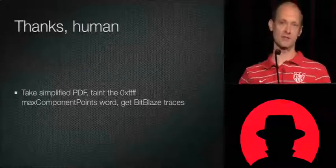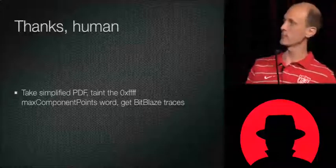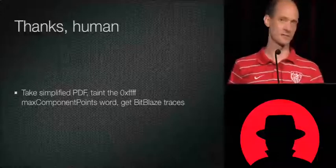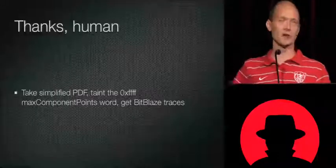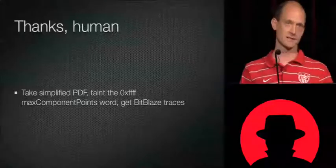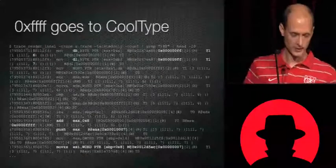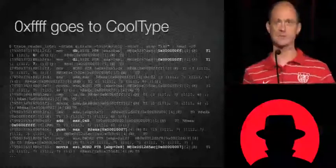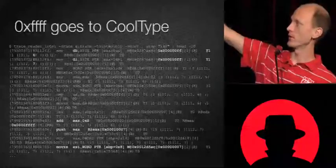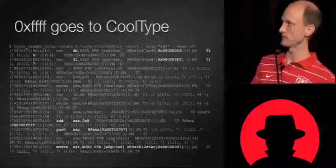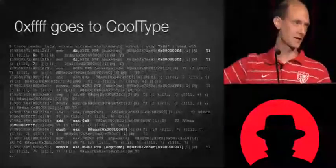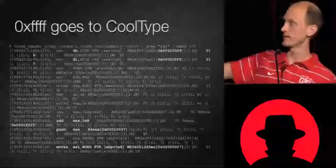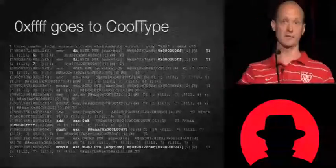Now I go back to BitBlaze. I have the simpler PDF now — uncompressed — and I taint the FFFF to see what happens. I'm rerunning everything with the FFFF tainted. I do the same thing again: tell me what instructions dealt with tainted data inside the CoolType DLL. Right off the bat, the very first line starts telling me how this FFFF gets used. First it reads the sixth byte of offset into DH, then the seventh byte — reading both those FFFs. Then what does it do? They're in DX, and then it adds 8 to it.